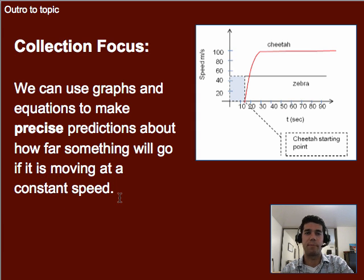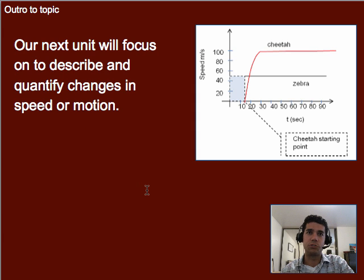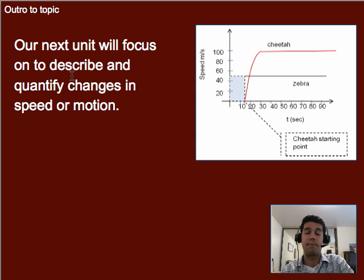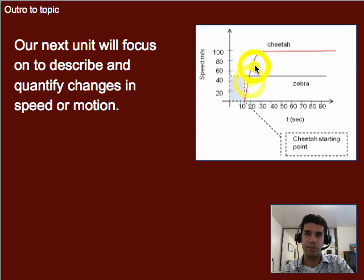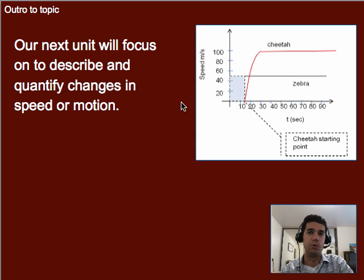We've only been talking about constant speed, which brings us to what we'll move into next: how do you describe and quantify changes in speed or motion? No longer talking about something going at a constant speed — but how do we describe this part of the graph right here, where the cheetah is speeding up? What do we do to describe that in physics? That will be the focus of the next unit.